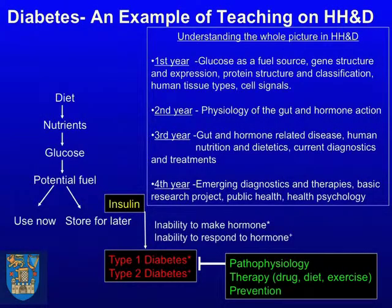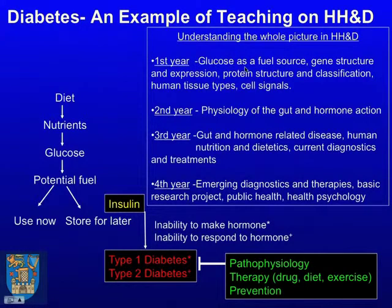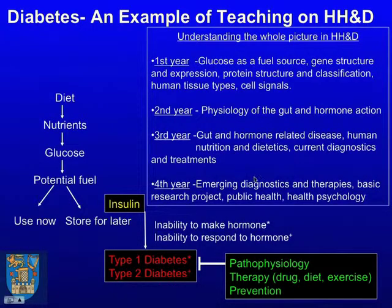As an example of how continuity works throughout the four years — take diabetes as a disease. In first year, you might learn about glucose as a fuel source and various aspects of basic physiology. In second year, basic physiology of the gut and hormones. In third year, you start to learn more about diagnostics, treatment, and the disease itself. And in fourth year, it really all comes together — public health and your research project.